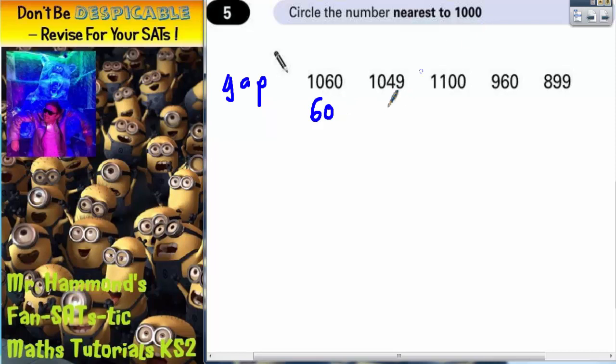1049 is 49 more than 1000. 1100 is 100 more.